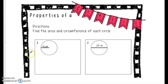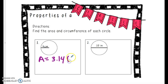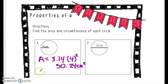Let's look at the first two examples on the organizer. We want to find the area and the circumference. Starting with area, we're going to use 3.14 times 4 squared because 4 is the radius. You can use a calculator for this and we get that the area is 50.24 centimeters squared. For circumference, I'm going to use 2 times pi times the radius because we're given the radius — so 2 times 3.14 times 4.